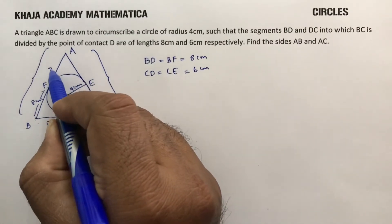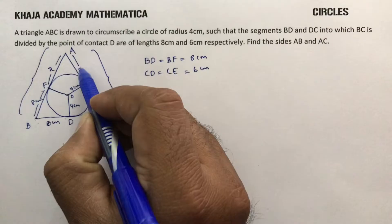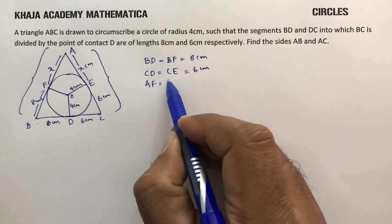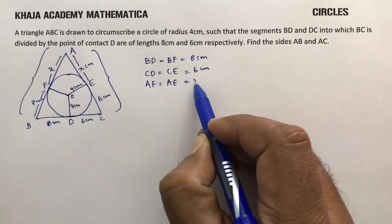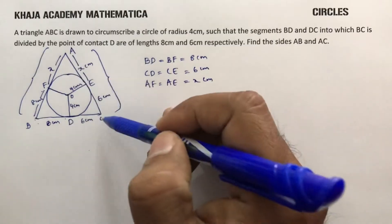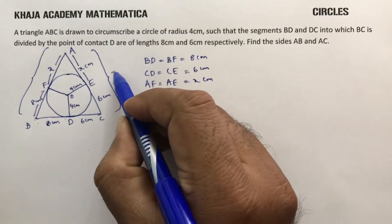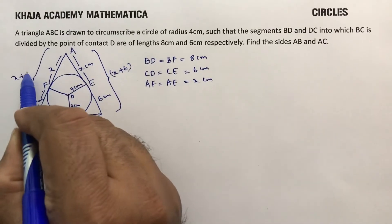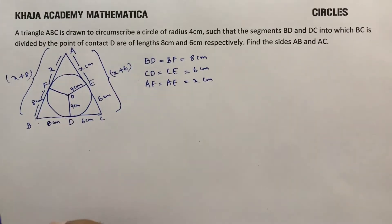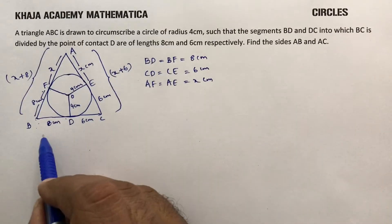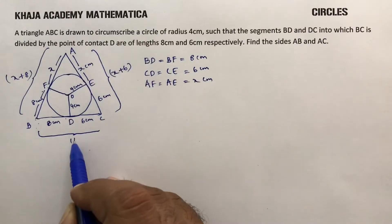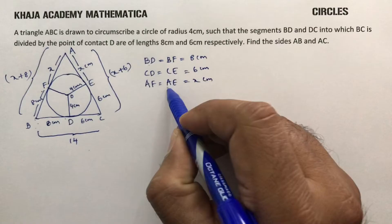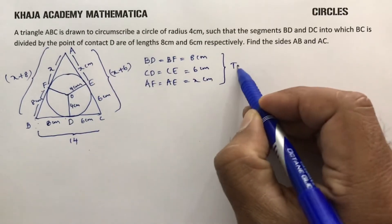I will consider AF as X centimeters. So AE also equals X centimeters, since AF equals AE equals X centimeters. Therefore AC will be X plus 6 centimeters, AB will be X plus 8 centimeters, and BC will be 8 plus 6 which is 14 centimeters. The reason is tangents drawn from an external point are equal: BD equals BF, CD equals CE, and AF equals AE.